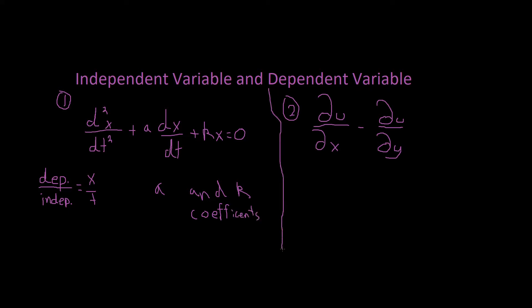Let's look at the next example. This involves partial derivatives — we have two partial derivatives here: a partial derivative of u divided by dx, and a partial derivative of du divided by dy. What are the dependent and independent variables? If you remember, we just always start by writing it out, and we can clearly see what is what.